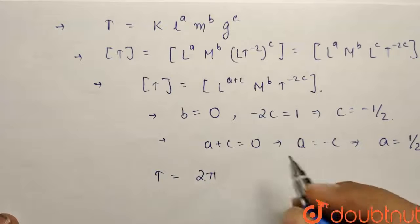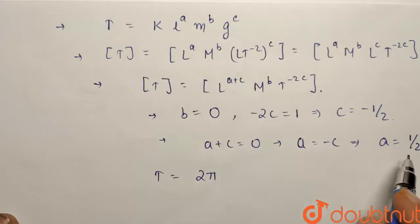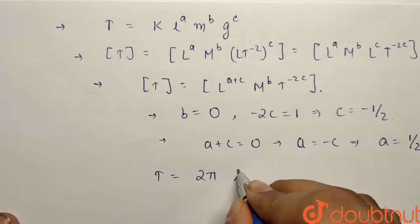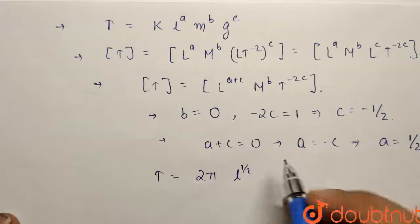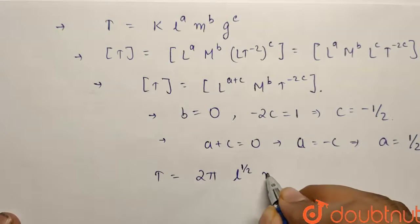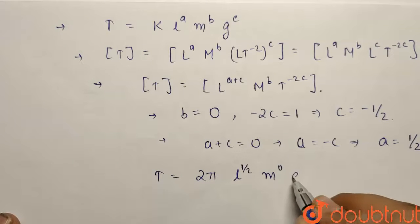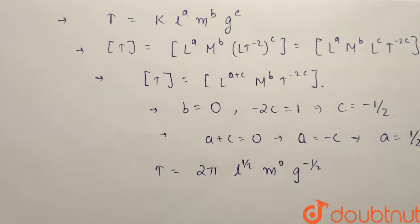So 2π into L to the power a, what is a? L to the power half, into mass to the power 0, b comes out to be 0, so m to the power 0, and g to the power minus half, we can see c comes out to be minus half.